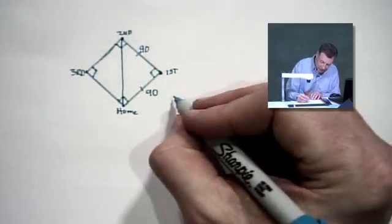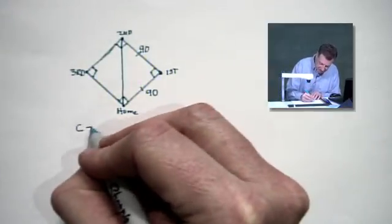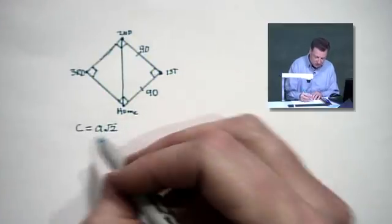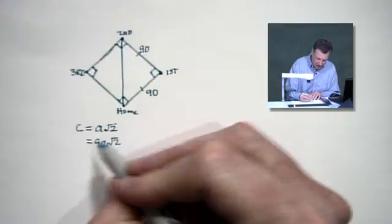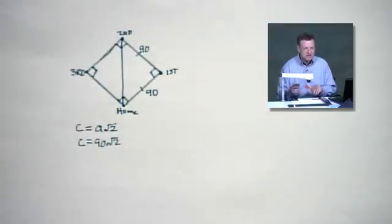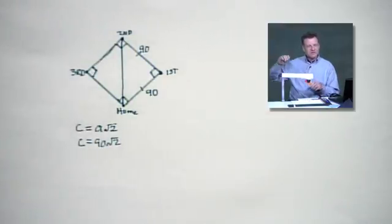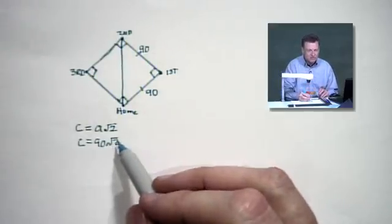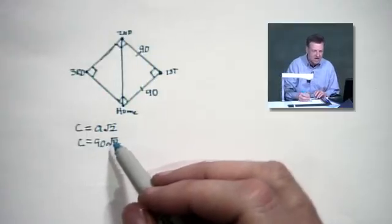You can use the formula that the hypotenuse, C, equals A times the root of 2. In this case, it would be 90 root 2. And we'll figure out how long that is in just a minute, because everybody says we don't know how to throw 90 root 2 out there, but that's how long it is. It's basically 90 times that value of the root of 2, or square root of 2 if you want to go with that.